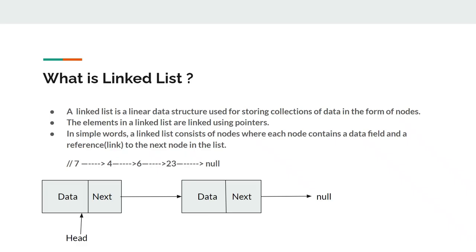So what is a linked list? A linked list is a linear data structure which is used for storing a collection of data in the form of nodes. Linear data structures are those where data elements are arranged sequentially or linearly, where each element is attached to the previous and next adjacent element. Therefore, we can traverse all the elements in a single run. In the linked list, the elements are linked using pointers. In simple words, a linked list consists of nodes where each node contains data and a pointer to the next node.